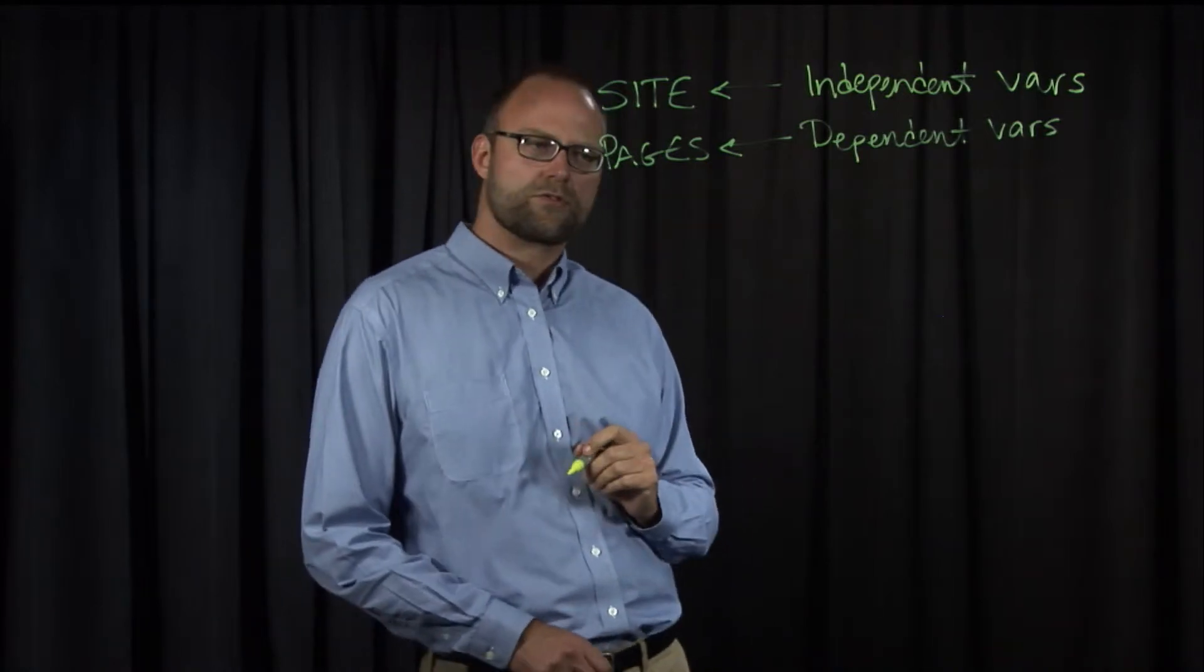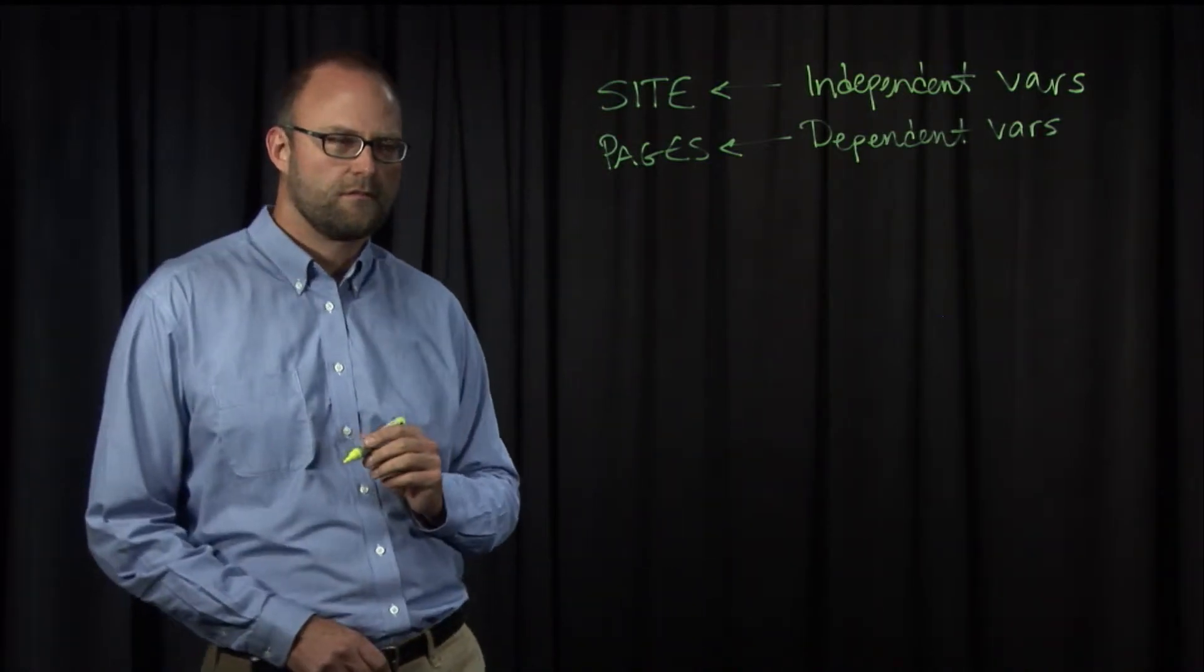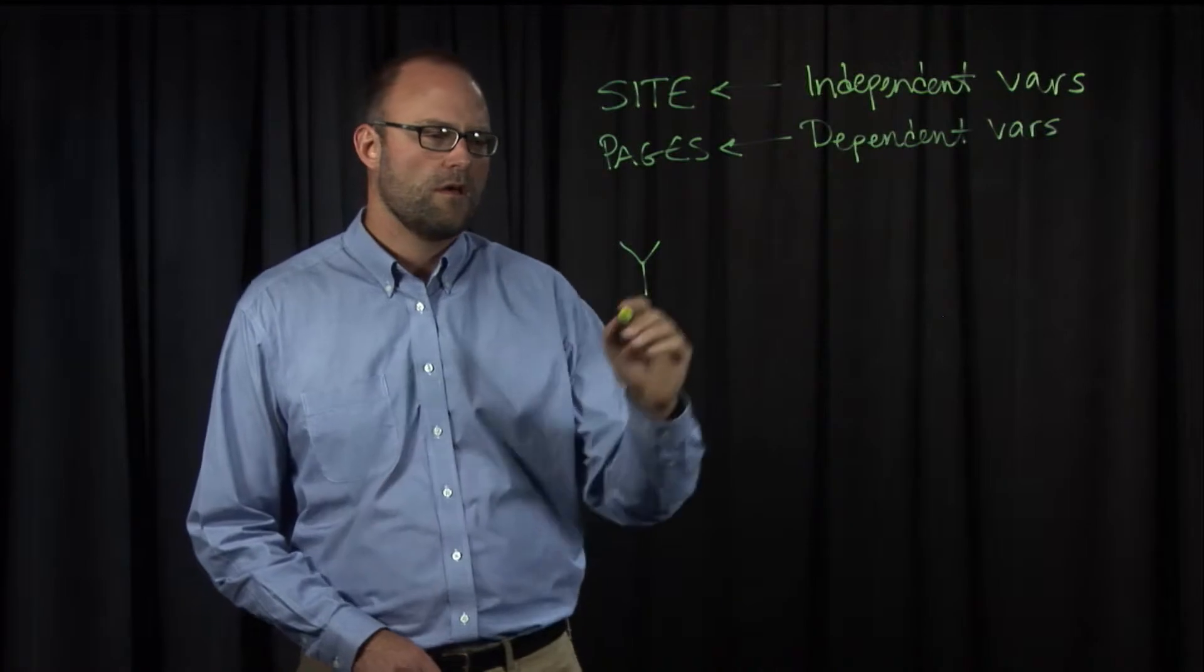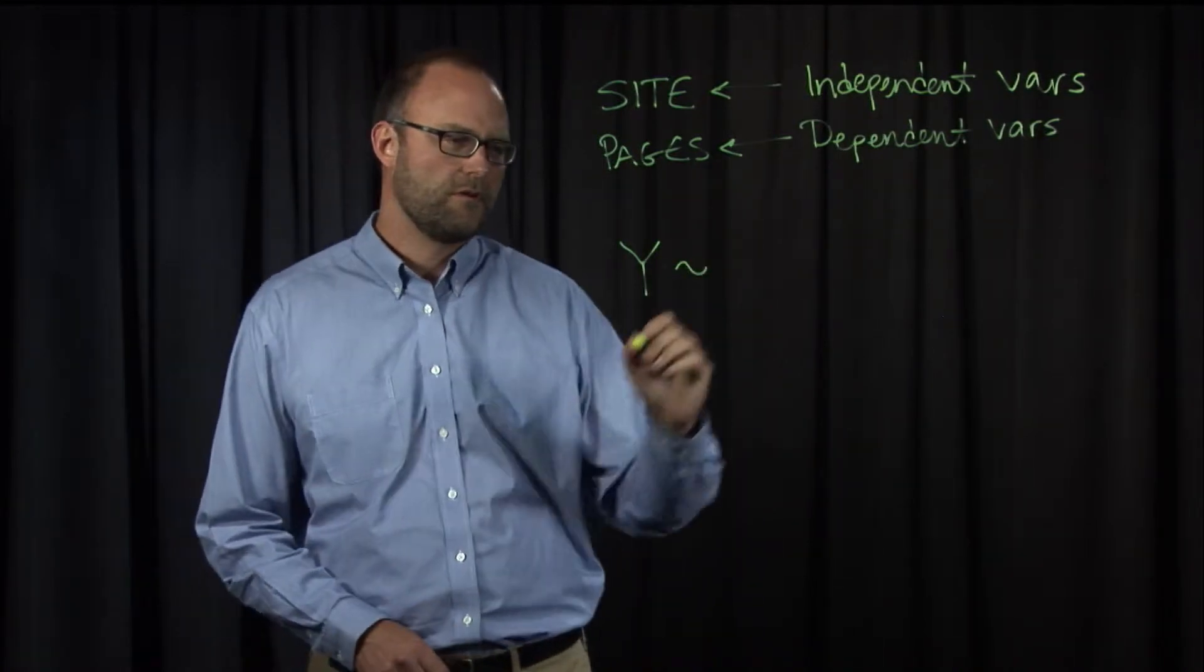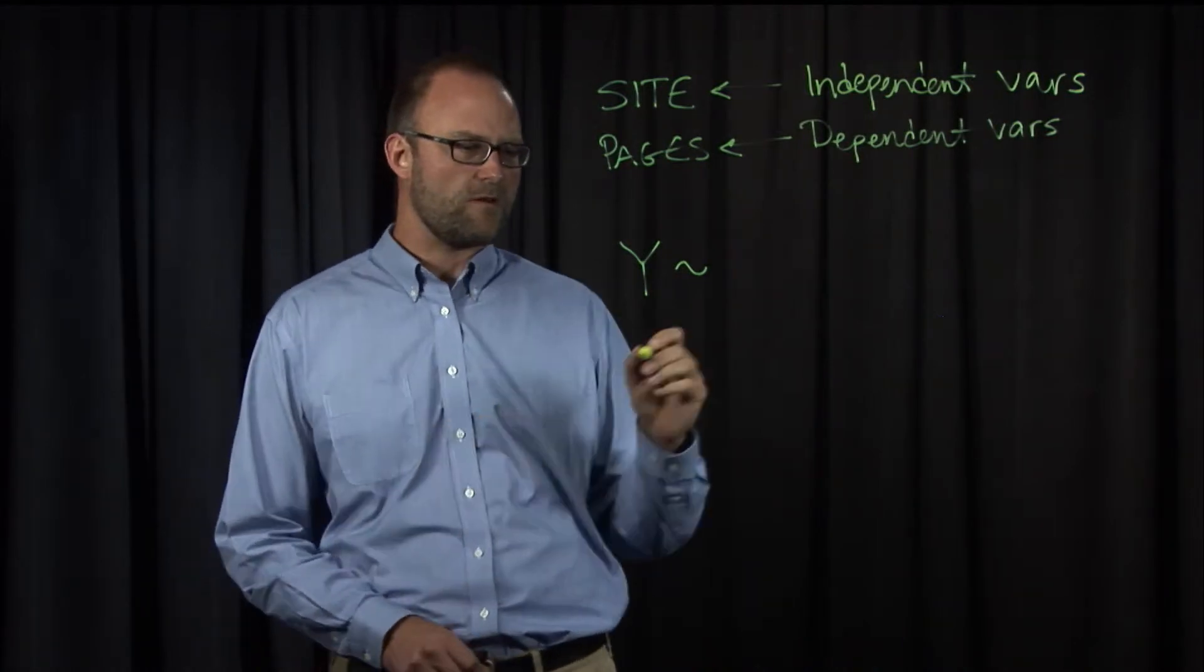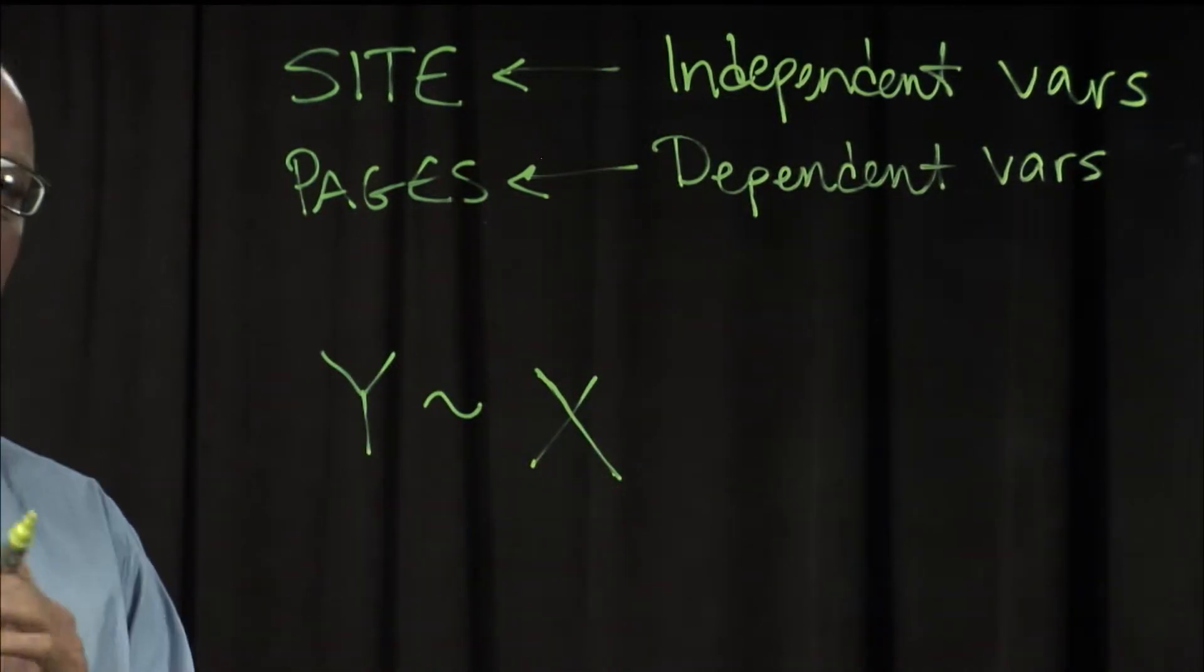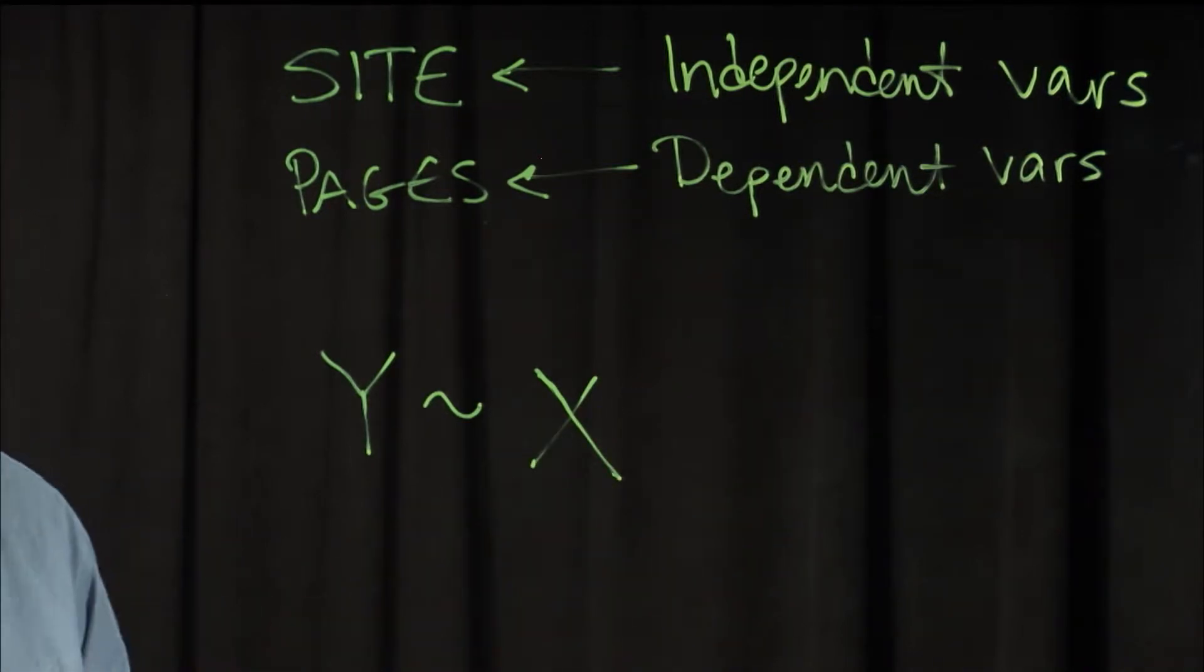Now let's talk in general terms for a moment. The idea behind an experiment is that some measure Y is going to change and be a result of some independent variables. Let's say X, we just have one here, so we'll call it X, but if we had more than one, which we'll see later in the course, we may have X1 and X2 and X3 and so on.